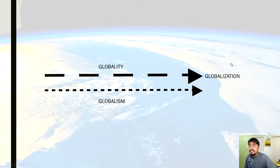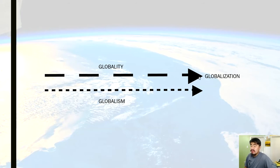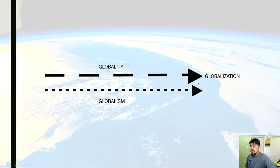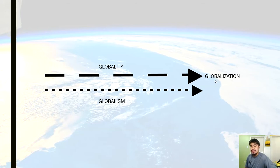So globalization is a process, and there's a certain outcome. Did we achieve the outcome? That is still debatable, because globalization is an unending process — it continues. Although we now experience the current product, that product is part of the social process.